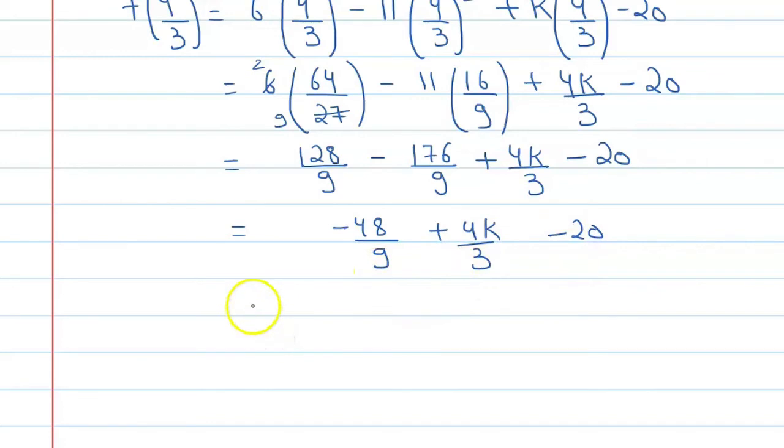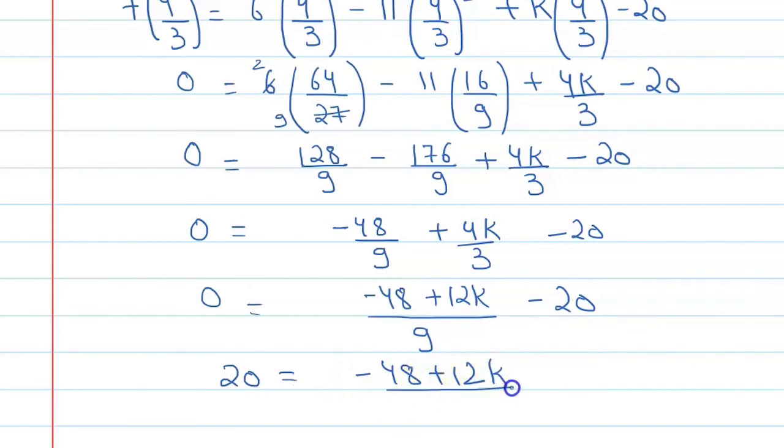We will take common denominator which will become 9, and this is minus 48 plus 12k minus 20. We will take 20 to the other side. You know it is equal to 0. So when we shift 20, this will become 20 minus 48 plus 12k upon 9. We will multiply 9 to the left hand side.